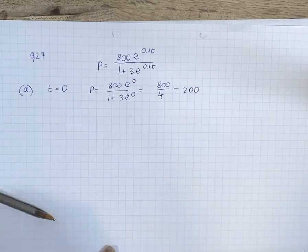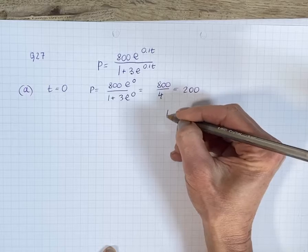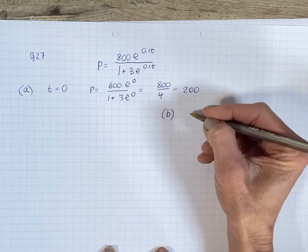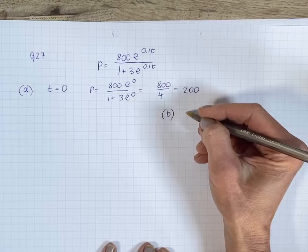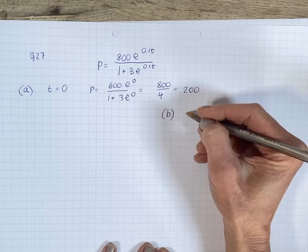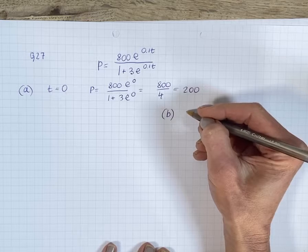I'll do part b, although this is not because you should be able to solve this kind of equation eventually, but it won't be on the test. Find the value, exact value of t when P is 250.